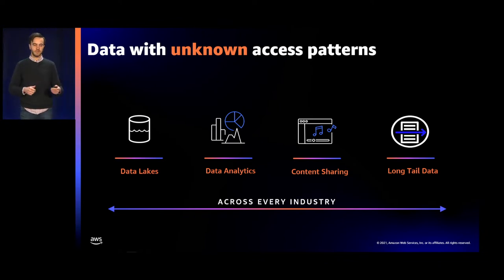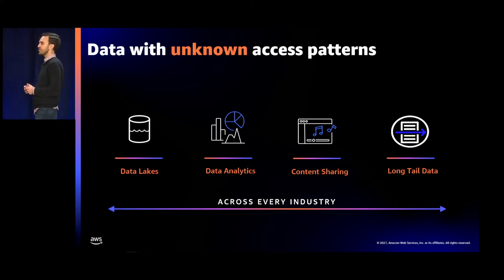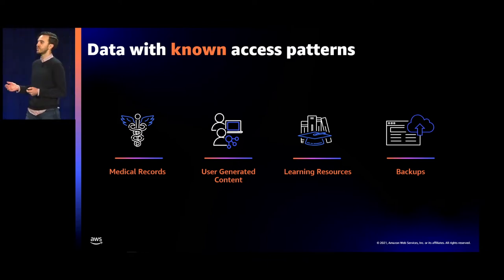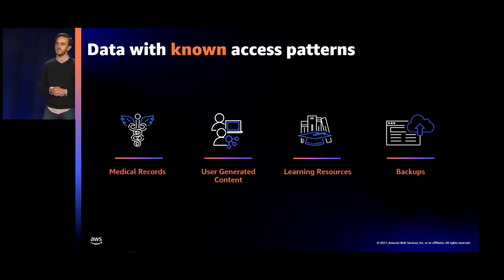Take another example of public research data available to scientists and economists — including weather pattern data, economic data, and driving data. These datasets are often rarely accessed for very long periods of time, but unforeseen world events could drive a surge in demand. Some examples of use cases with known or predictable access patterns include medical imaging — healthcare providers store medical images in a frequent access class for a period of time, then move to archive storage after a few weeks. A more relatable example is user-generated content, such as a photo-sharing site.